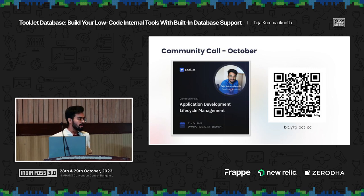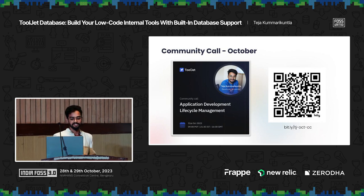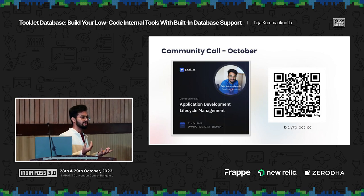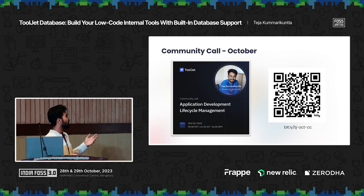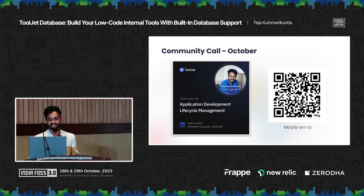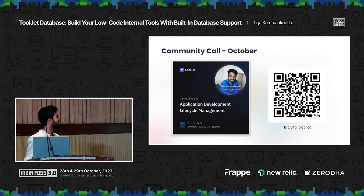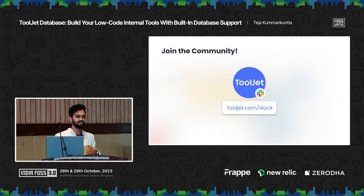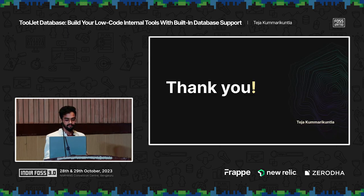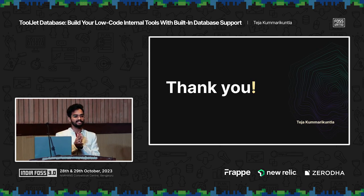We have a community call coming up on Tuesday the 31st, where we're talking more about ToolJet and the application development lifecycle. If you're interested, you can register — scan the QR or go to bit.ly/tj-oct-cc, which stands for the ToolJet October Community Call. You can also join our Slack community at tooljet.com/slack. I think I've covered it all, so I look forward to any questions.